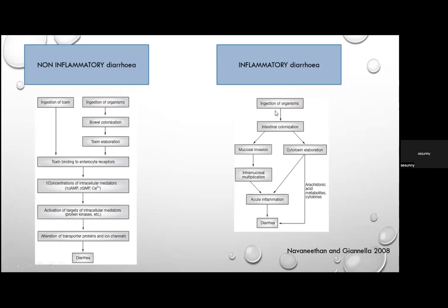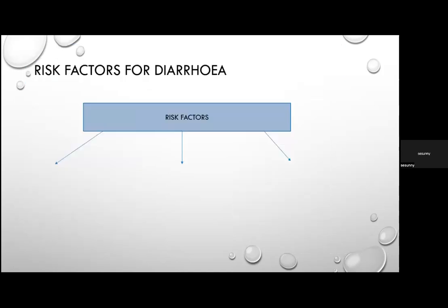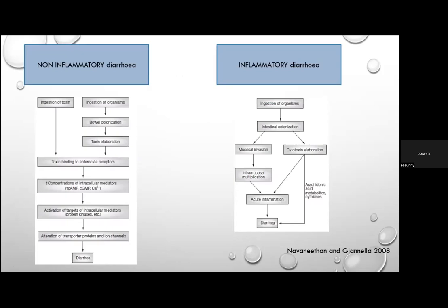With inflammatory diarrhoea, ingestion of the organism leads to intestinal colonization, mucosal invasion, intramucosal multiplication, and acute inflammation. Non-inflammatory diarrhoea mainly affects the small intestine; patients have more GI symptoms with few systemic signs. Inflammatory diarrhoea affects the distal ileum and colon, causing both GI and systemic signs due to microbial dissemination via the bloodstream, toxin effects, and the host inflammatory response.